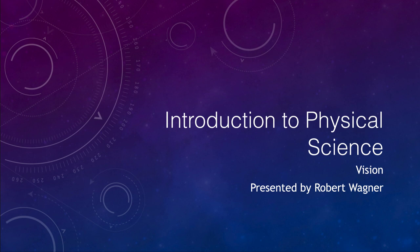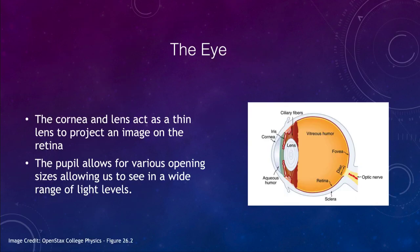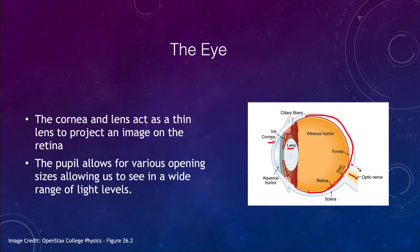Let's look at a sketch of our eye. You can see the various different parts. It is the cornea and the lens that work together and act as a thin lens. The thin lens approximation projects an image onto the retina in the back of the eye, and that information is sent via the optic nerve to the brain where it is converted into an image that we actually see.